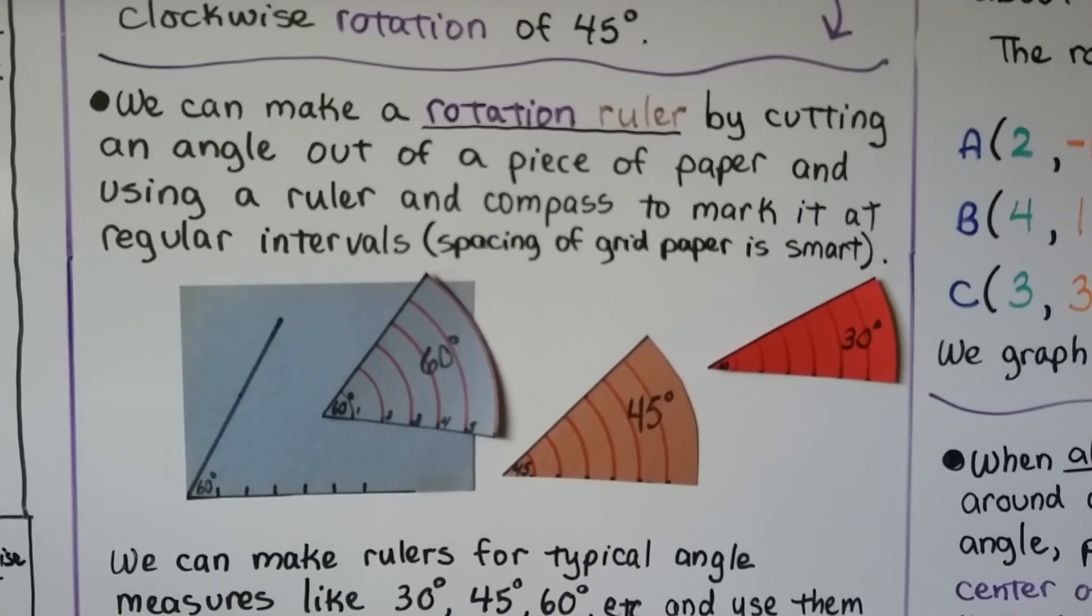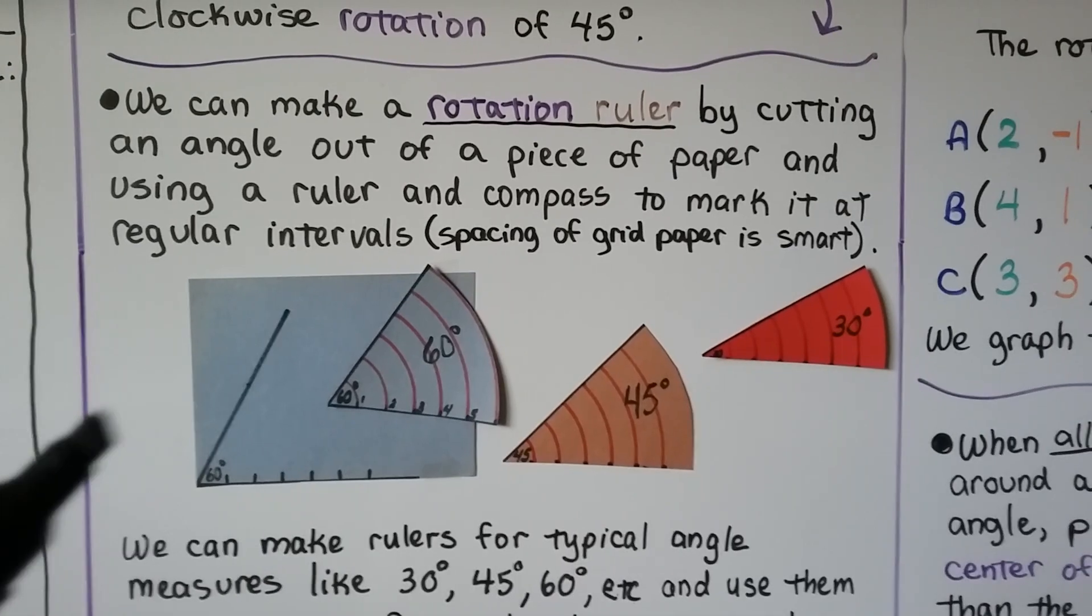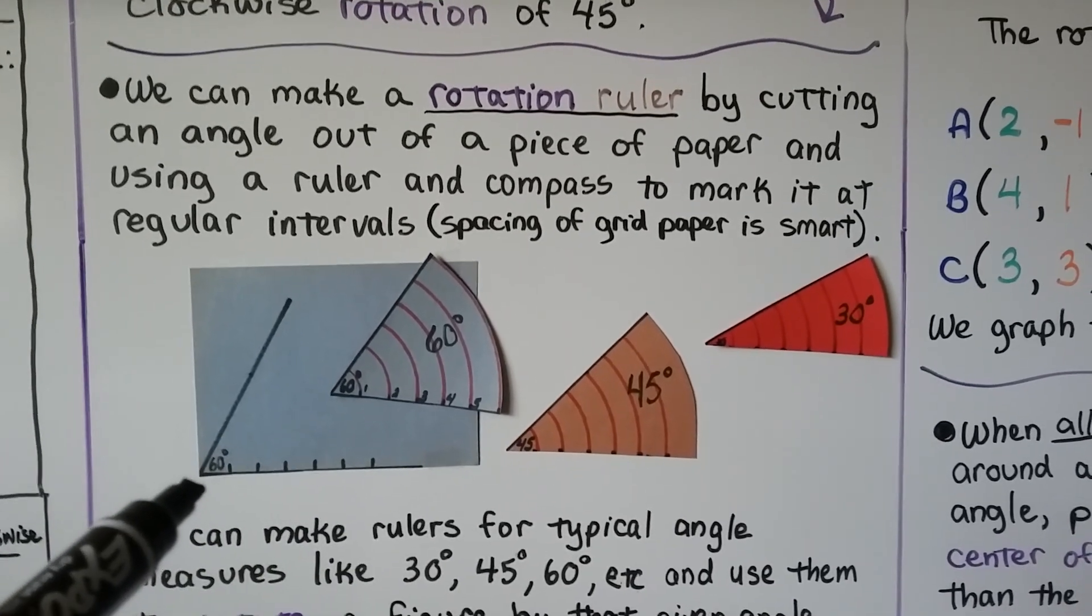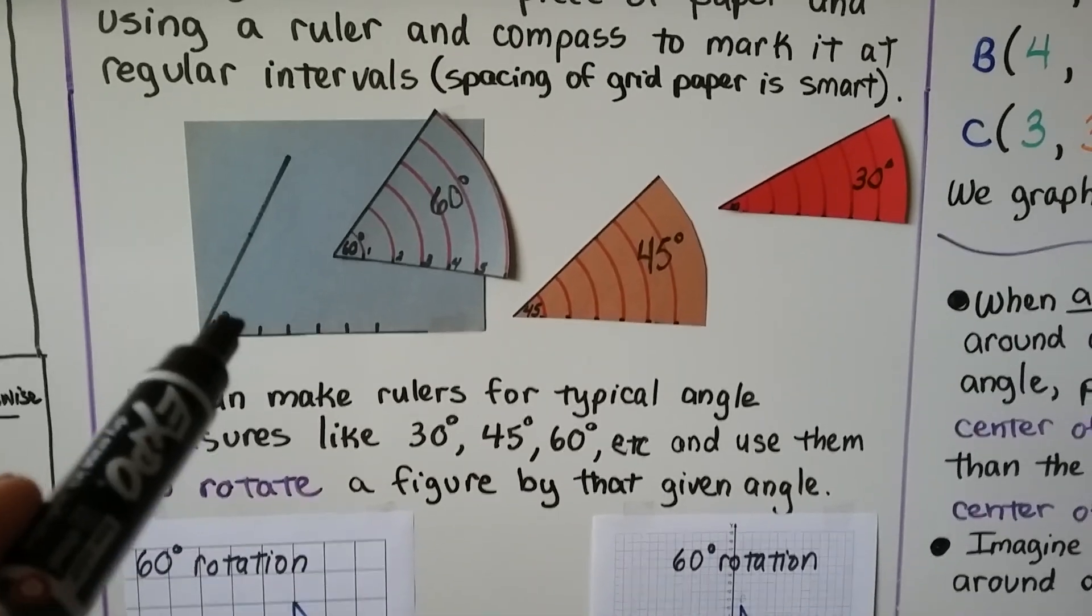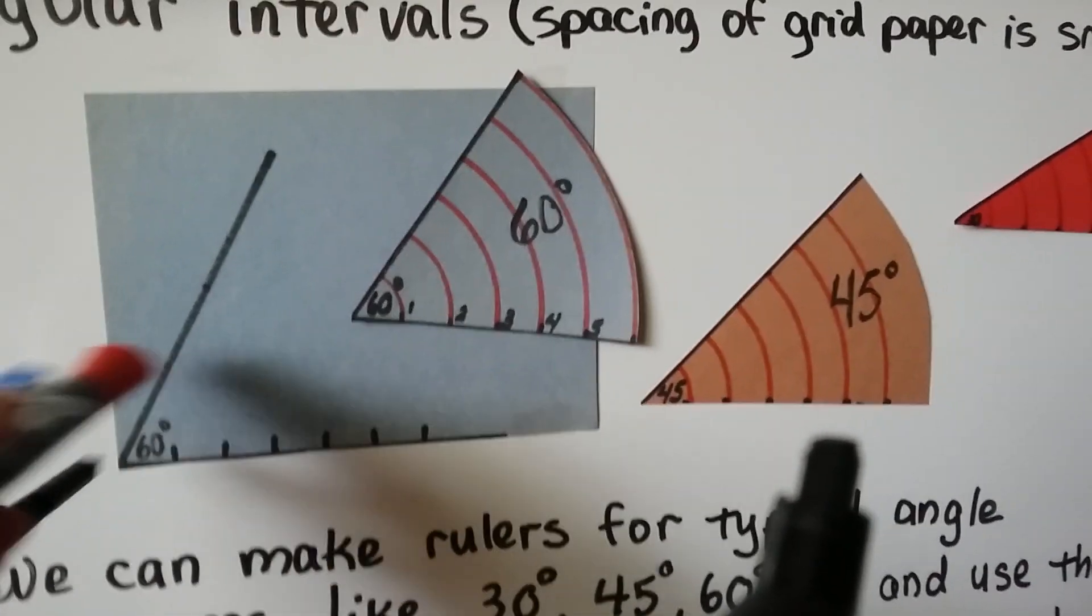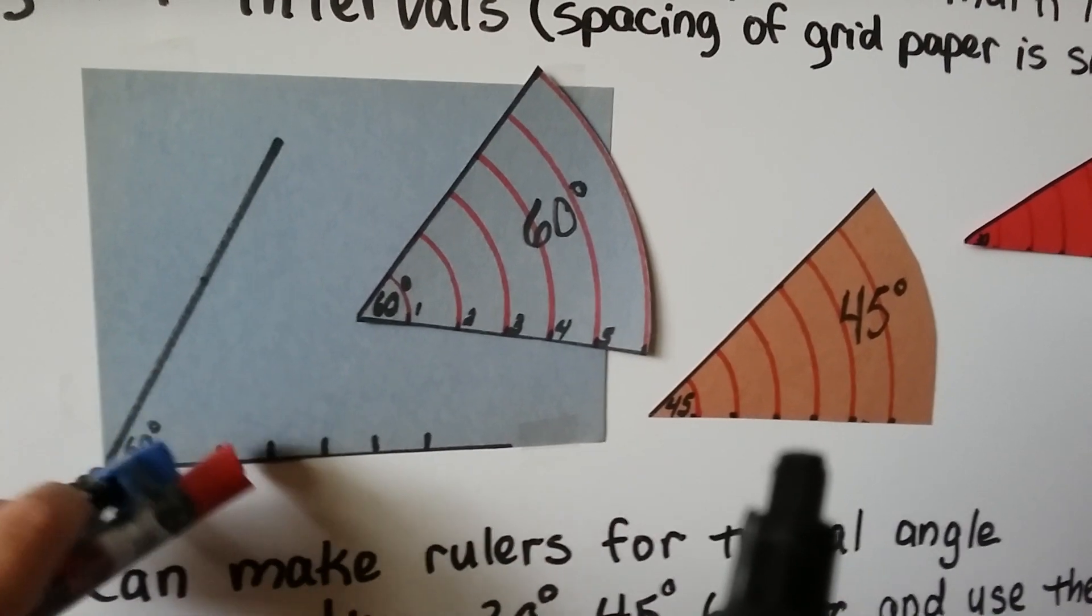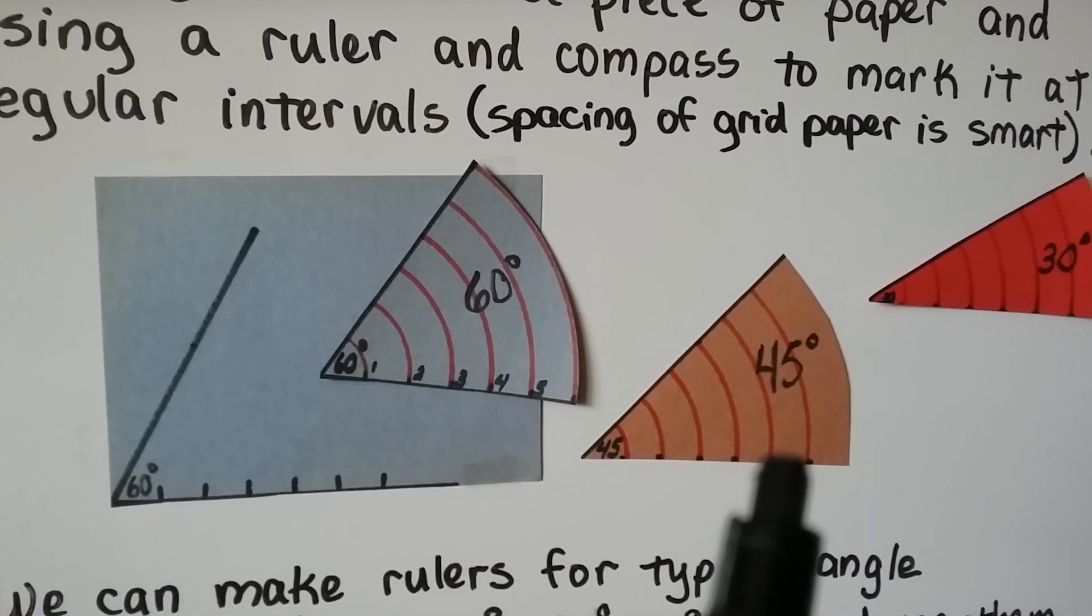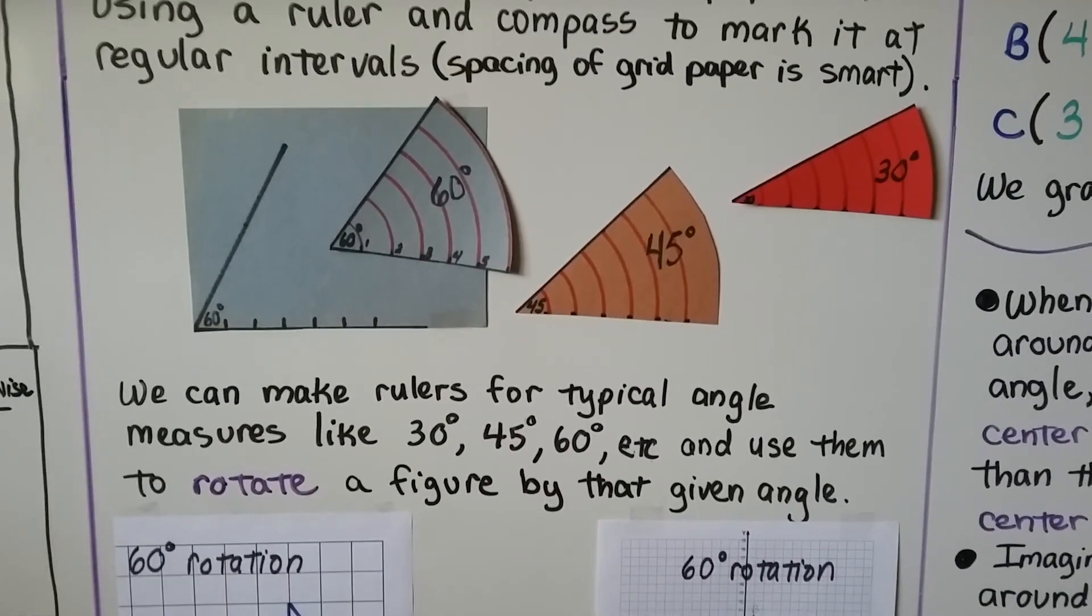Now we can make a rotation ruler by cutting an angle out of a piece of paper and using a ruler and compass to mark it at regular intervals. So the intervals, if you use the spacing of grid paper, it's smarter because then it'll match the paper you're doing for your work. So along the bottom here, we make a 60 degree angle and we mark it the same units as our graph paper.